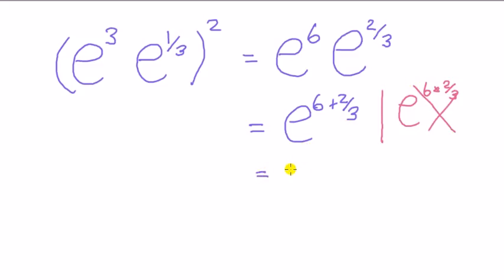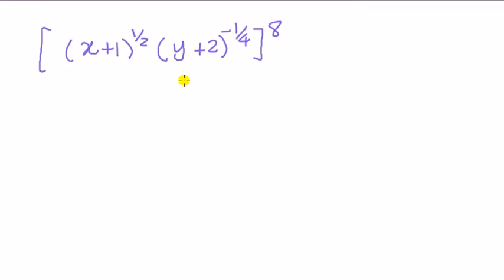You add these two together, that's e to the 20 over 3. You could just leave it there or write it down to a couple of decimal places.